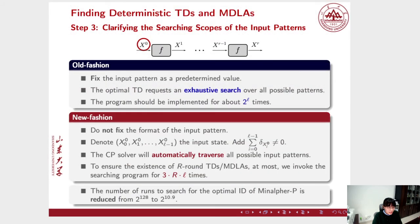The third step is clarifying the searching scope of the input patterns. Previously, the usual way is to fix the input pattern at a predetermined value. An ideal solution for the optimal TD is an exhaustive search over all possible input patterns, but it cannot be afforded when the internal state of the primitive has a considerable number of words. So, to overcome this incomplete search, in our new model, we do not fix the format of the input pattern and only claim that the input difference is non-zero. After adding this constraint into CSP, in the searching phase, the CP solver will automatically traverse all possible input patterns and the exhaustive search turns into an inherent feature of our model.